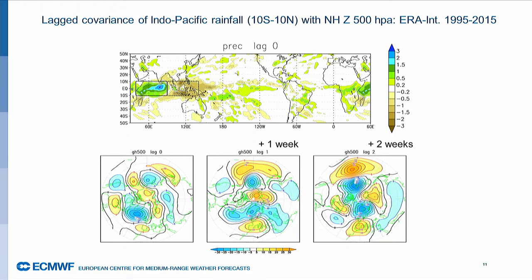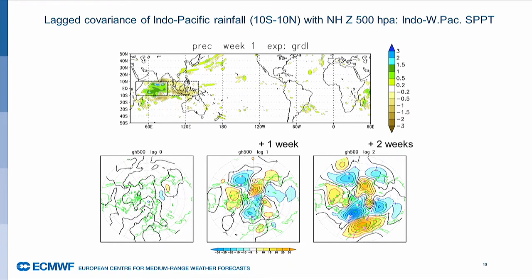Another way of seeing this is to start from the precipitation and do the covariance with some lag — that's the traditional approach. For example, using GPCP and ERA-Interim with a dipole in the same region as we use for seasonal forecast, after two weeks you again see this wave number two in the northern extratropics. If you do it with the experiment with perturbations only in the Indian Ocean, at lag zero you hardly see anything because the signal has not yet reached the extratropics, then you start seeing something after one week — wave number two — and this wave number two becomes fully developed after two weeks.